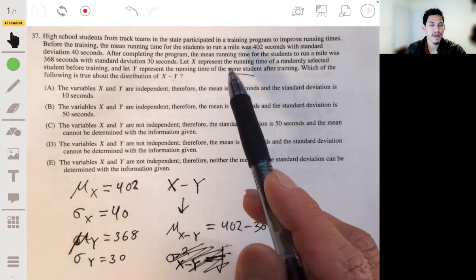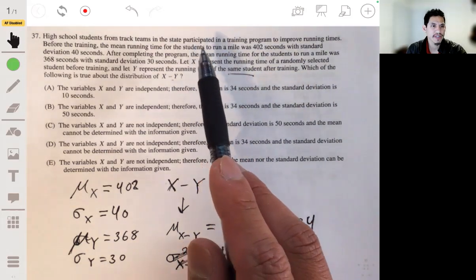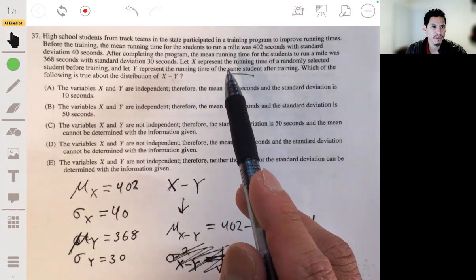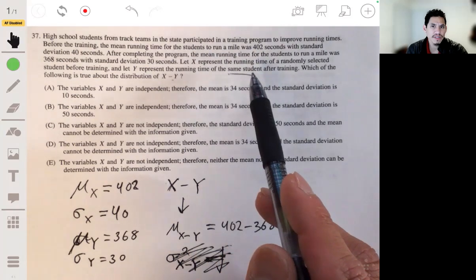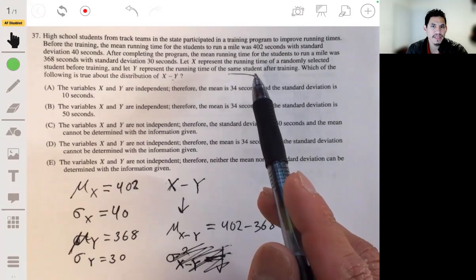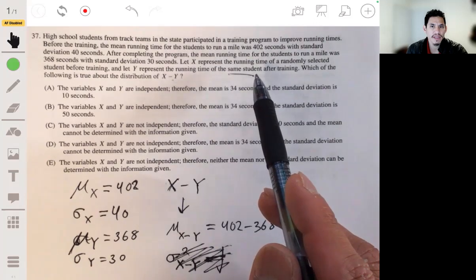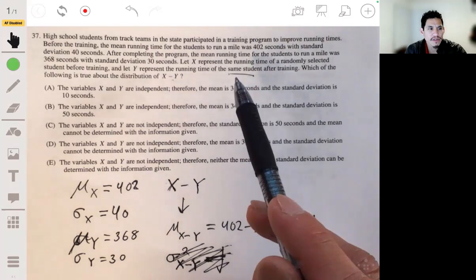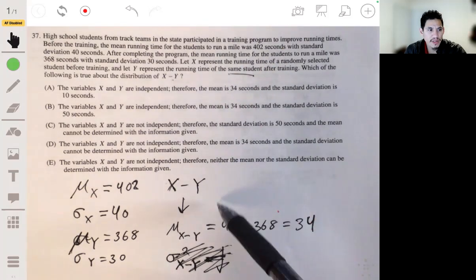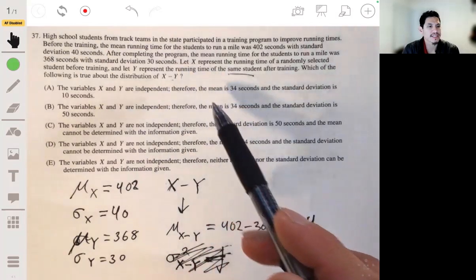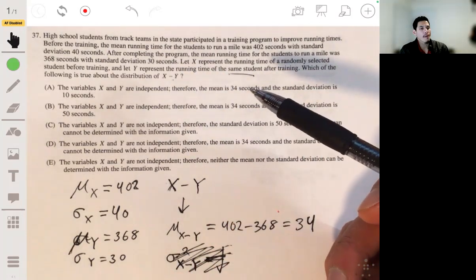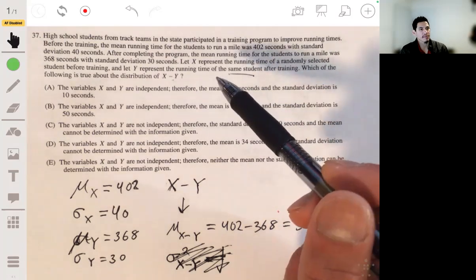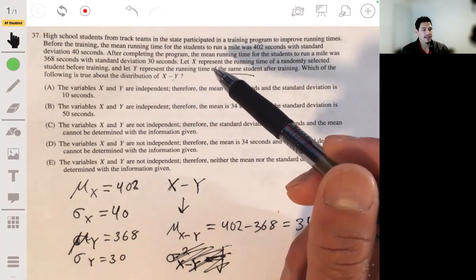In this case, since each individual was compared to their own time, the amount of improvement we can argue is based on the individual. Probably those that were already in really good shape to begin with probably didn't improve as much versus those who maybe never ran. So the mean would work, but the standard deviation or the variance can't be calculated because the x and y are not independent.